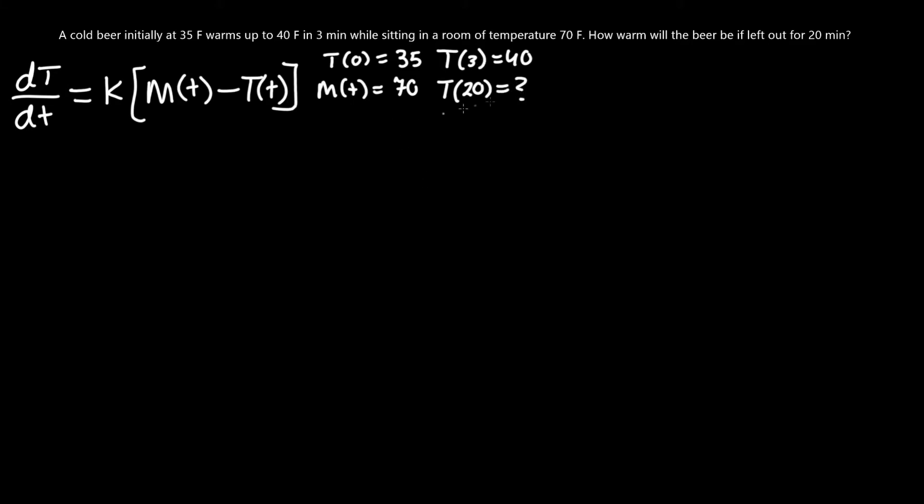So now we're trying to find how warm it will be after 20 minutes, therefore the temperature after 20 minutes equals what? And that is what we are going to find. So let's start plugging in these values. We got dT/dt equals k, since we don't know the proportionality constant yet, times M which is 70 minus T(t) which is the function we are going to find.